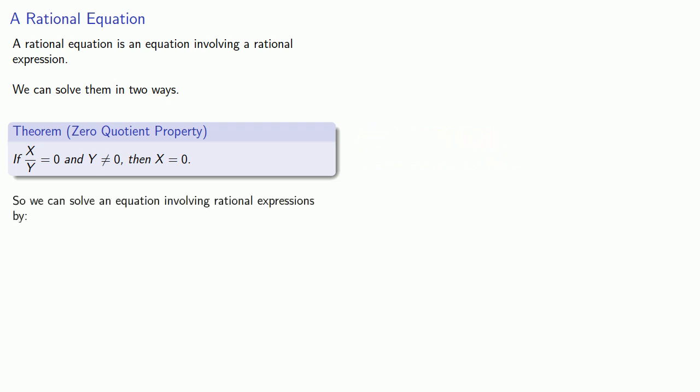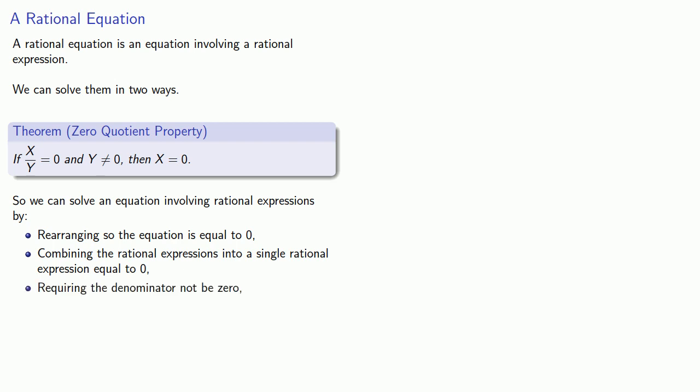This means we can solve an equation involving rational expressions by rearranging so the equation is equal to zero, combining the rational expressions into a single rational expression equal to zero, requiring the denominator not be zero, and requiring the numerator to be equal to zero.